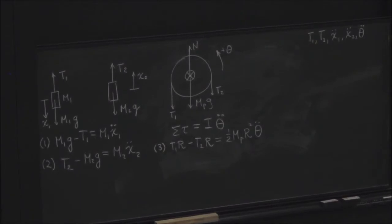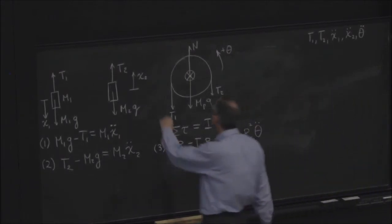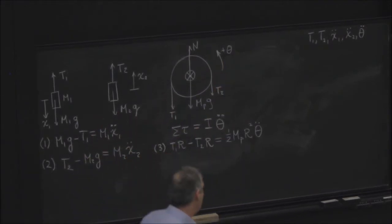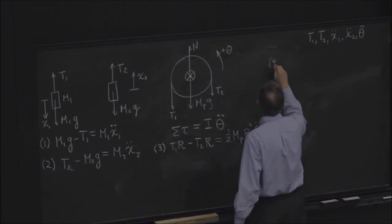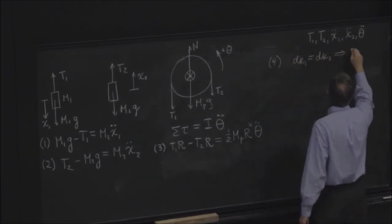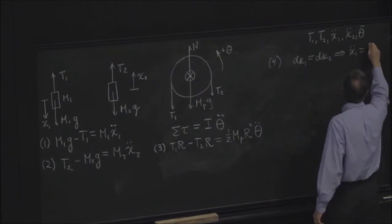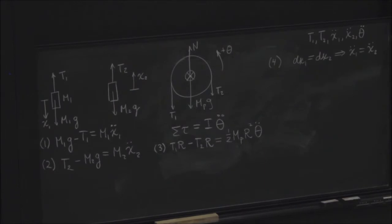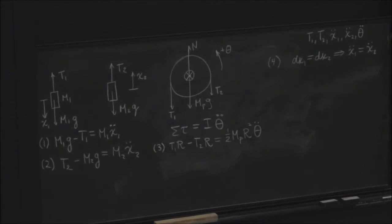How am I going to get rid of some of these unknowns? If the string doesn't stretch, what do you know about x1 double dot compared to x2 double dot? They have to be the same because for any little distance that one moves down, two moves up the same amount. So all changes to one have to be equal to the other. So a fourth equation would be that dx1 must be equal to dx2. And therefore, x1 double dot is equal to x2 double dot. That's four. One more and we're golden. Where am I going to get one more? Skillfully played.